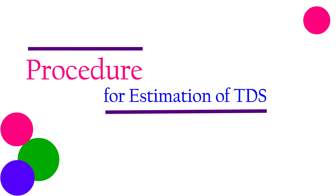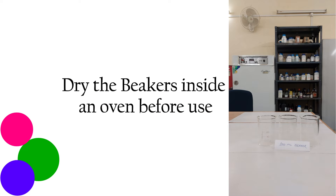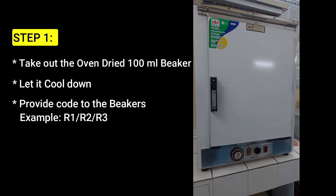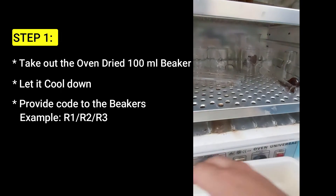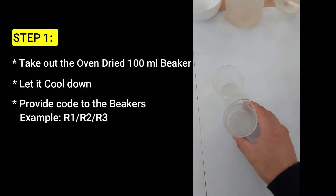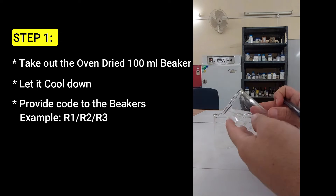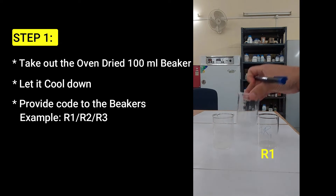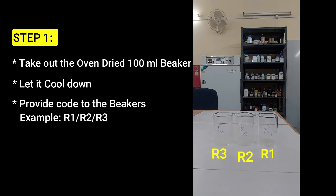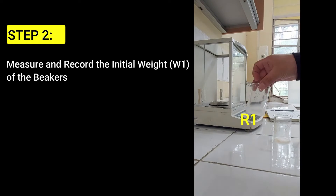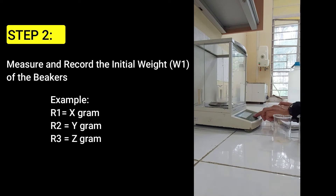Next, let's move on to the procedures for estimation of total dissolved solids. First of all, you have to dry the 100 ml beaker in an oven. After drying them for almost 24 hours, take out the oven-dried beakers, let them cool down, and then provide codes such as replicate 1, 2, and 3 to avoid confusion when analyzing many samples. Then measure and record the initial weight of each beaker.